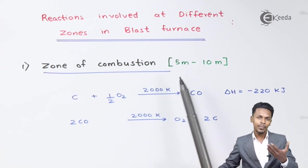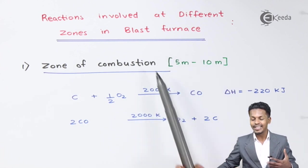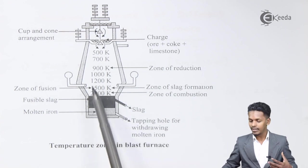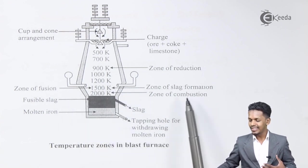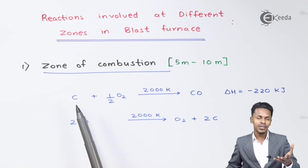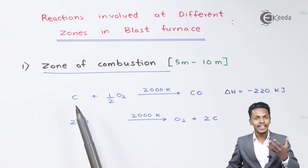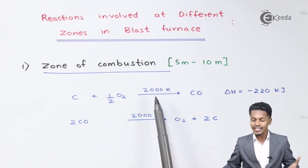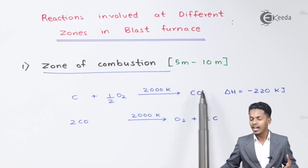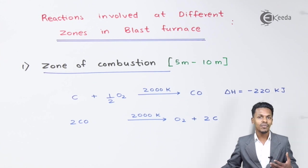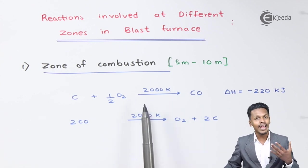The zone of combustion takes place from 5 meters to 10 meters height from the bottom. In this region, carbon reacts with oxygen at a temperature of around 2000 Kelvin to form carbon monoxide, releasing approximately 220 kilojoules of energy. This is an exothermic reaction.